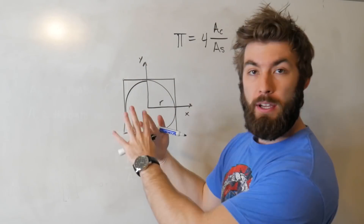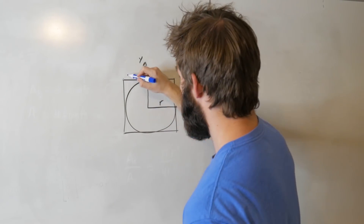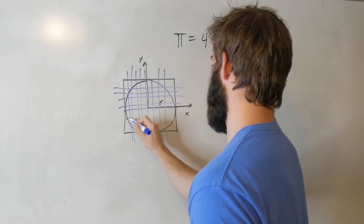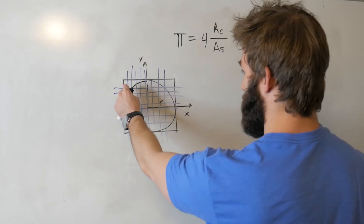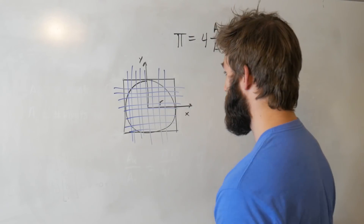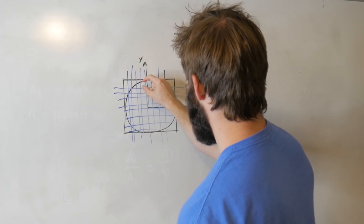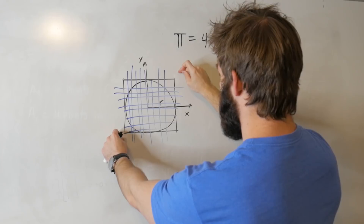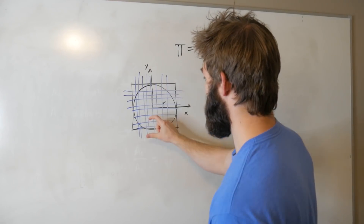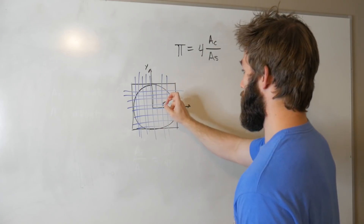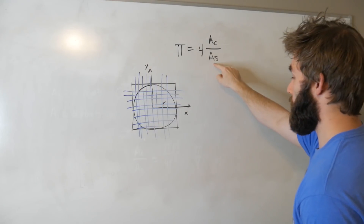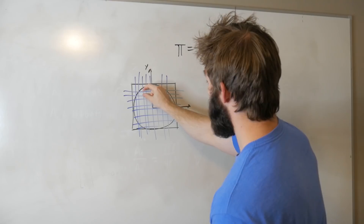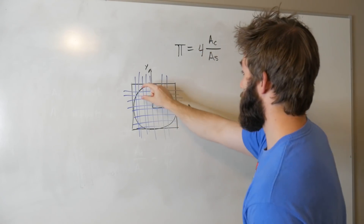So imagine just slapping all this stuff onto a grid. We're going to have a whole bunch of lines on a grid, and pretend all of these little blocks are uniformly spaced out. If we added up all of the number of these squares on this grid, what we would get is the area of the square. So this is telling us that pi is equal to 4 times all of the squares that are only within the circle divided by the total number of squares.